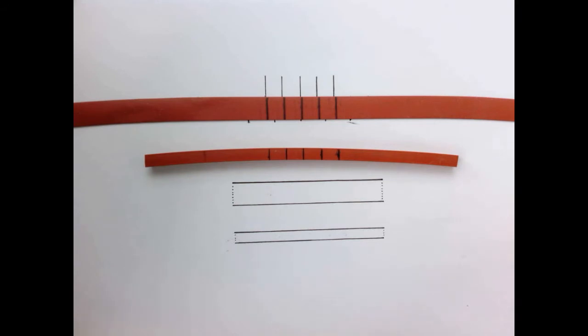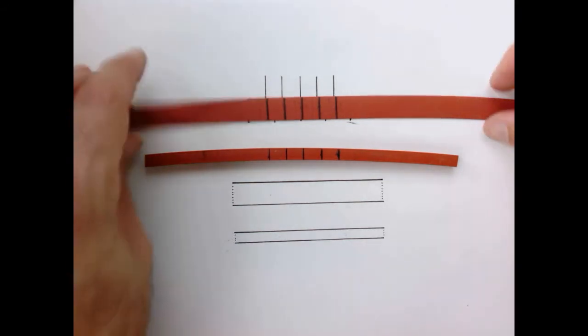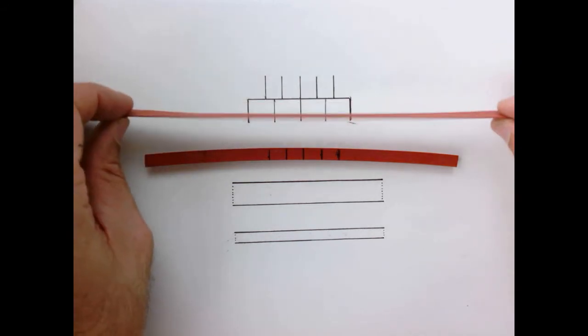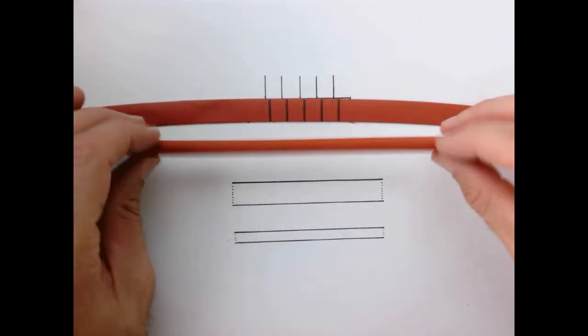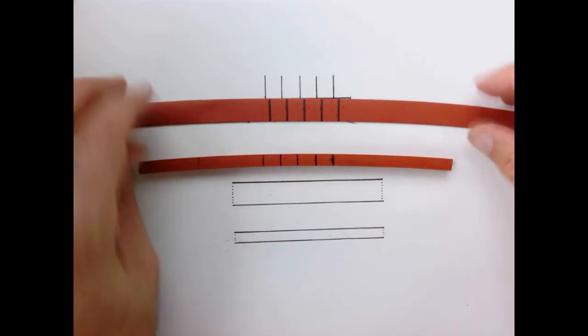So now let's look a little more carefully at what happens when we pull on a material in tension. So here I have two pieces of rubber. One is very thin, the other has a square cross-section. So let's start with a thin one.